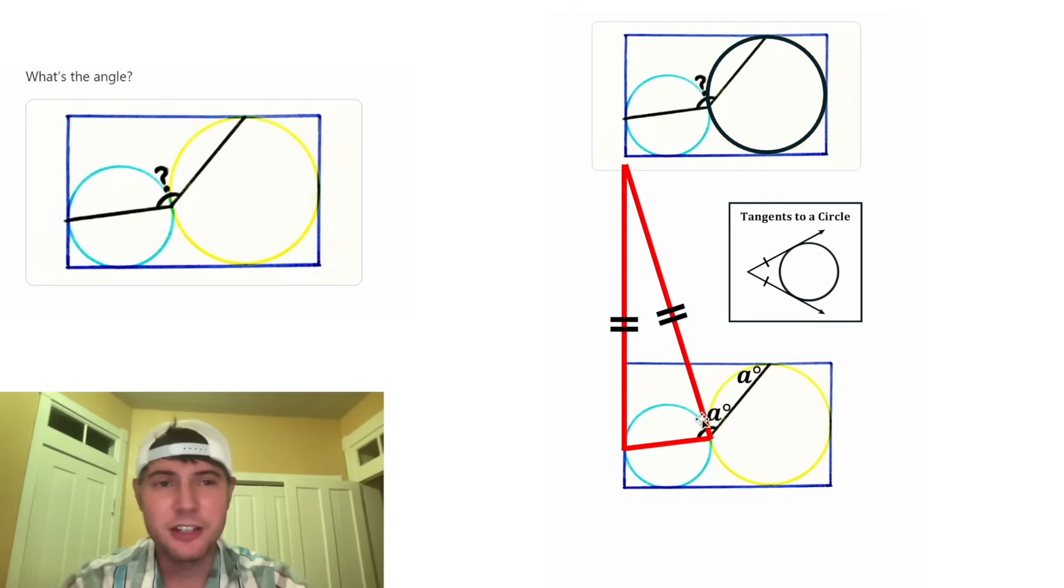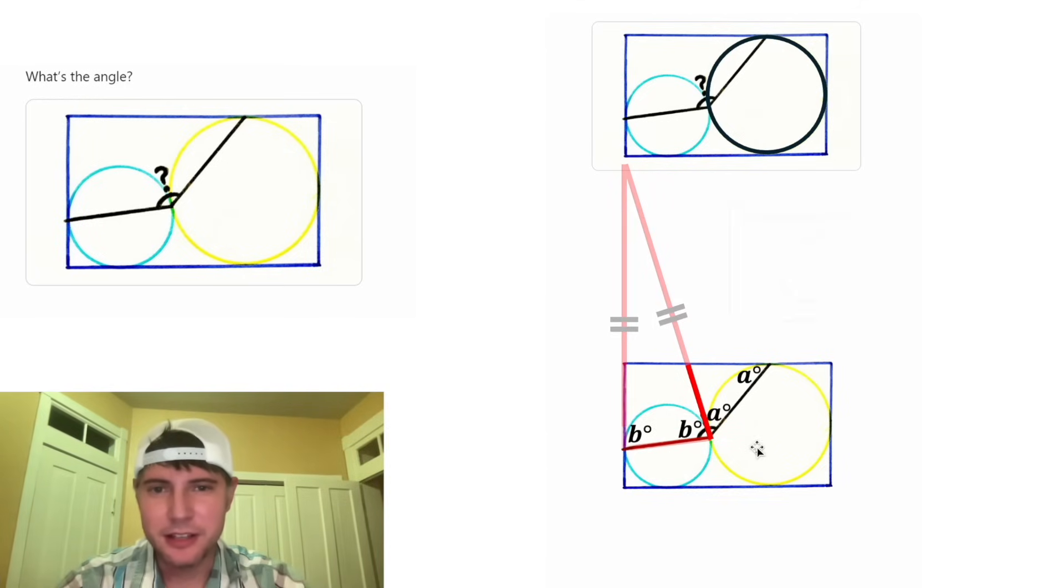Since these two sides are congruent, the base angles are congruent. Let's give them both a measure of B degrees. And now let's clean this up.